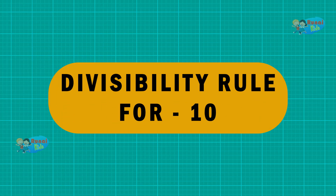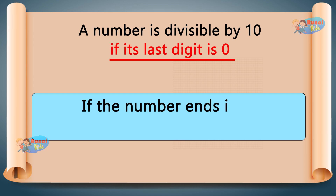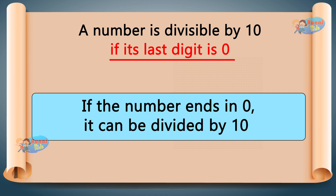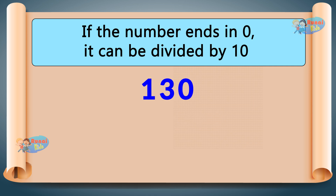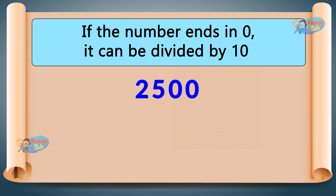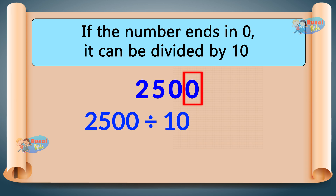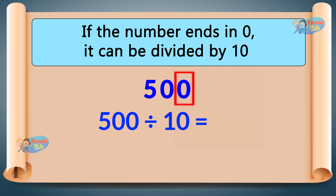Divisibility Rule for 10: A number is divisible by 10 if its last digit is 0. If the number ends in 0, it can be divided by 10 perfectly. 20 — last digit is 0, so 20 divided by 10 equals 2. 130 — last digit is 0, so 130 divided by 10 equals 13. 2500 — last digit is 0, so 2500 divided by 10 equals 250. 500 — last digit is 0, so 500 divided by 10 equals 50.